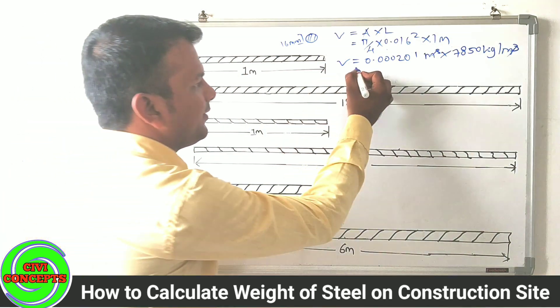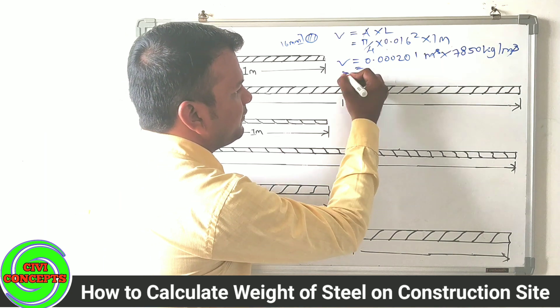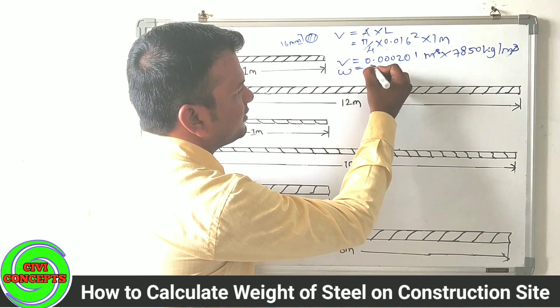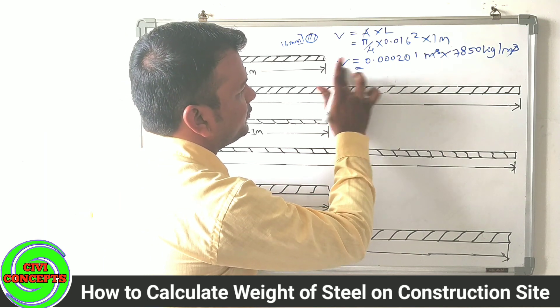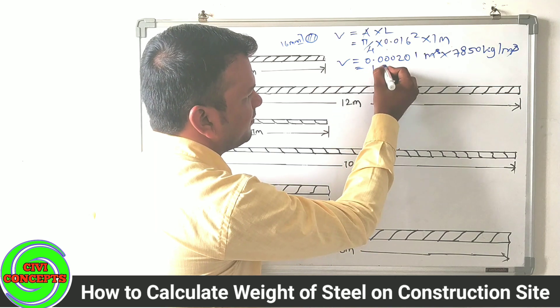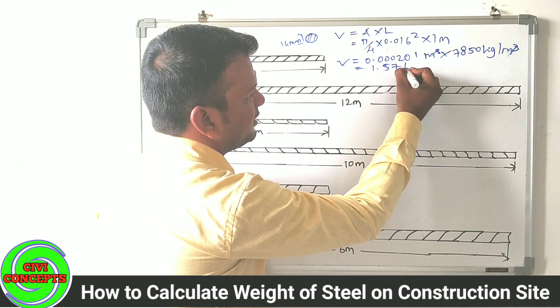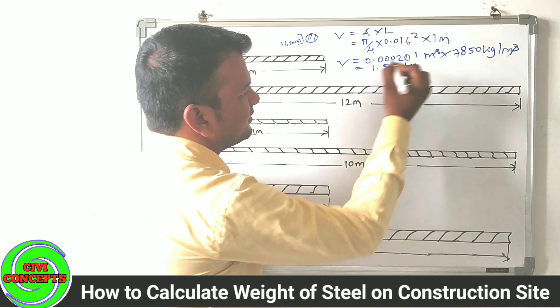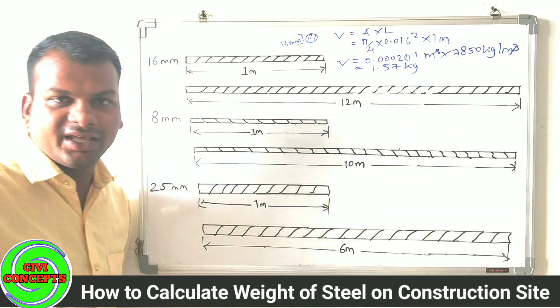So this gives us our answer: the unit weight. The unit weight comes out to 1.57 kg, and this is per 1 meter length.